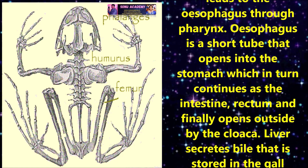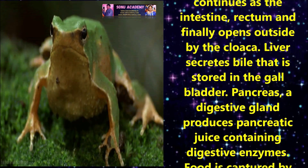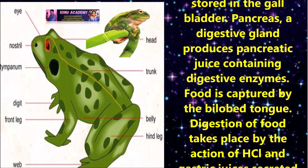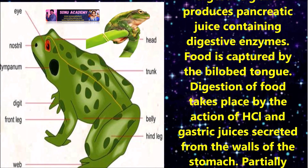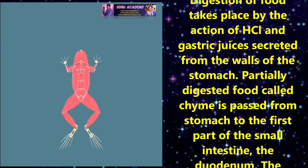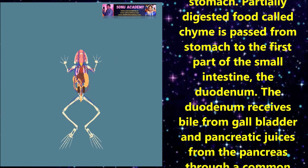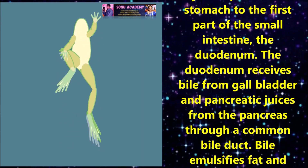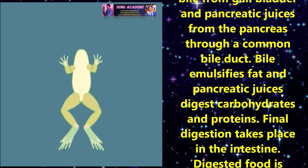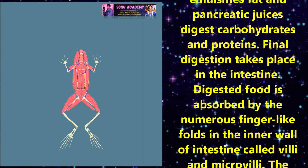The oesophagus is a short tube that opens into the stomach, which in turn continues as the intestine, rectum, and finally opens outside by the cloaca. The liver secretes bile that is stored in the gall bladder. The pancreas is a digestive gland that produces pancreatic juice containing digestive enzymes. Food is captured by the bilobed tongue. Digestion of food takes place by the action of HCl and gastric juices secreted from the walls of the stomach. Partially digested food called chyme is passed from the stomach to the first part of the small intestine, the duodenum. The duodenum receives bile from the gallbladder and pancreatic juices from the pancreas through a common bile duct. Bile emulsifies fat and pancreatic juices digest carbohydrates and proteins.